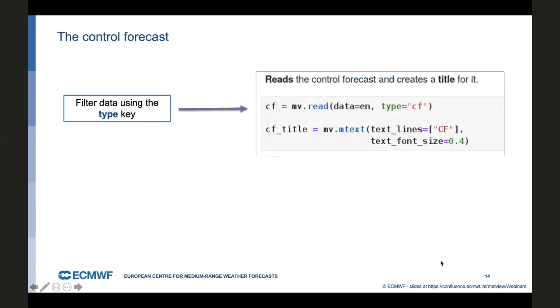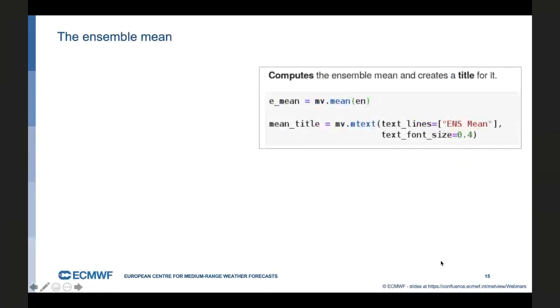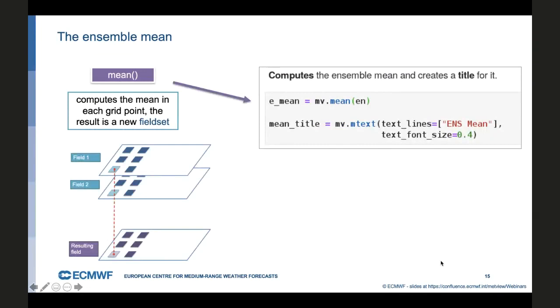So we move on to the control forecast. It's very simple. We just call the read command again with the type key set to CF and get the field we want. And we define a custom title for it. The next field we need to create is the ensemble mean. We need to compute it. We can do it with the mean function and then define the title for it. Now the mean function is performing pointwise aggregation. This is how the fields actually are looking like. So an EN fieldset contains 51 fields. And the mean for each grid point computes the mean value for only that grid point through all the fields. And in the end, we have only one resulting field. That's what's stored in E_mean.